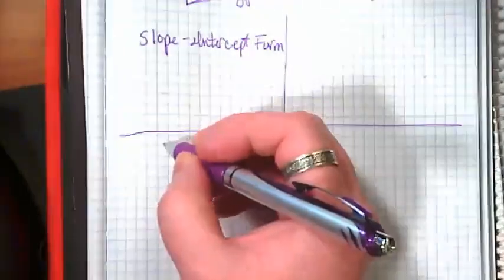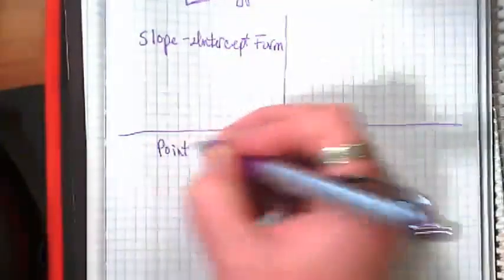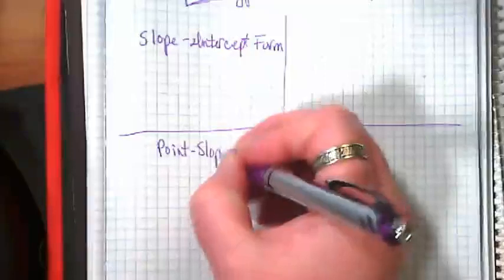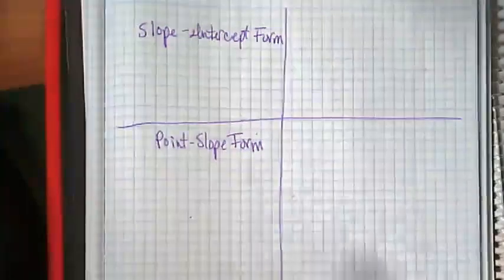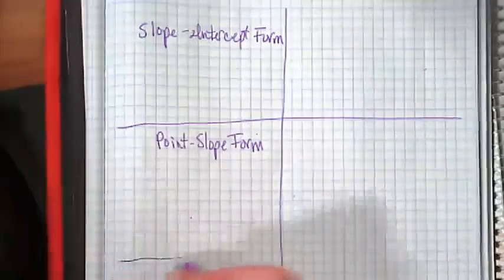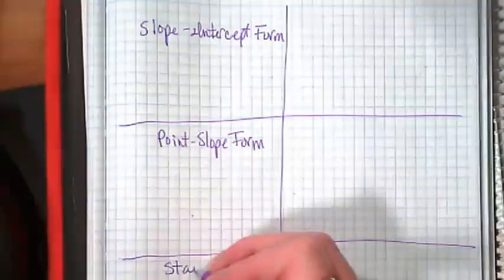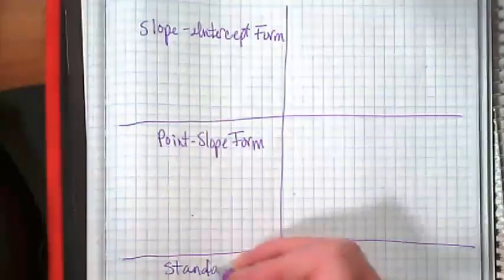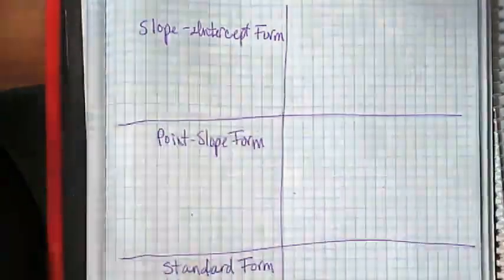And then make a space for the second one, which is called point-slope form.